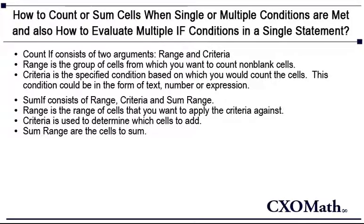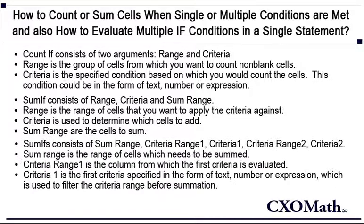Now let's look at the syntax for the SUMIF function. SUMIF consists of range, criteria, and sum range. Range is the range of cells that you want to apply the criteria against. Criteria is used to determine which cells need to be added. Sum range are the cells to be summed.